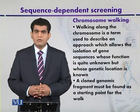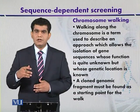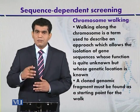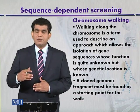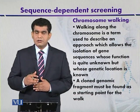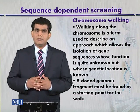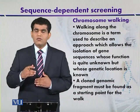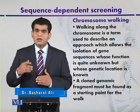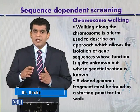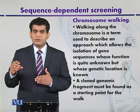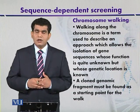Chromosome walking is a technique used for the screening of libraries. If we digest genomic DNA randomly, overlapping DNA fragments are produced. These overlapping fragments can be used for the detection of neighboring fragments because their ends overlap with each other, and one fragment can be used to detect the next fragment by a technique called chromosome walking.